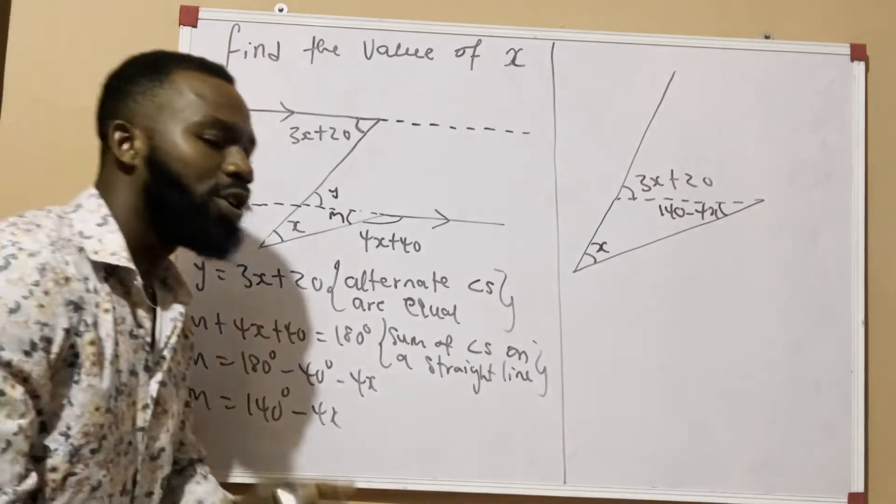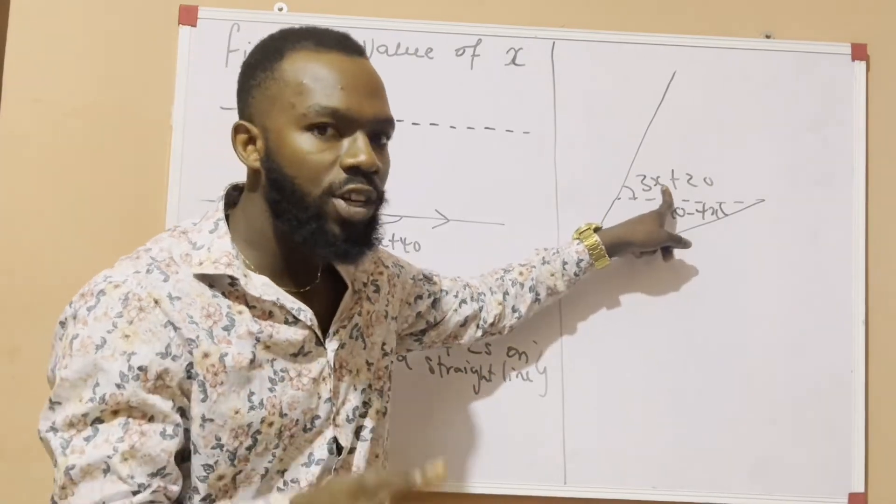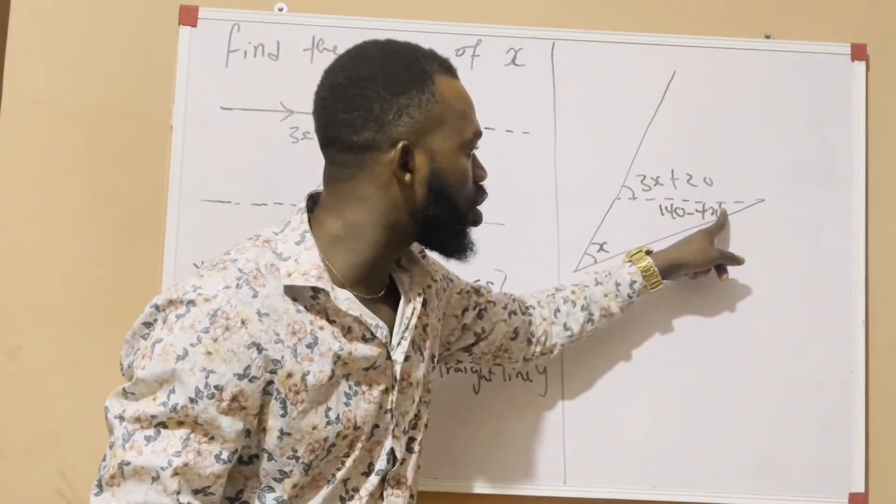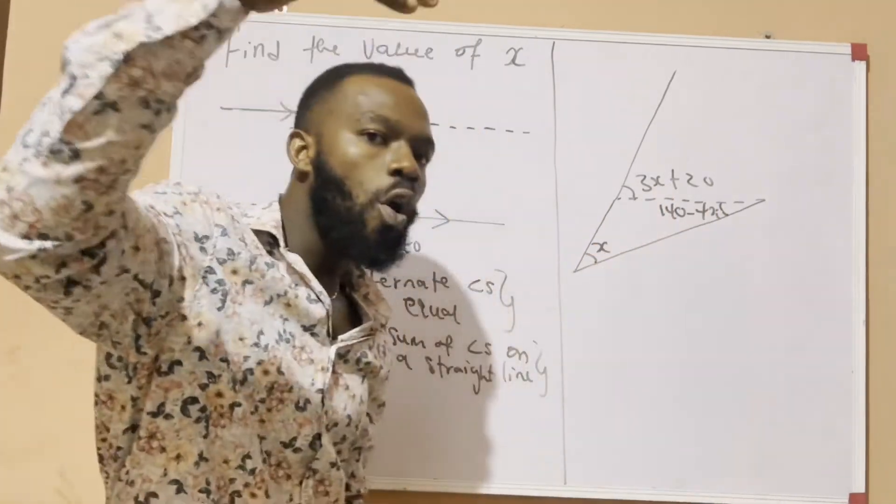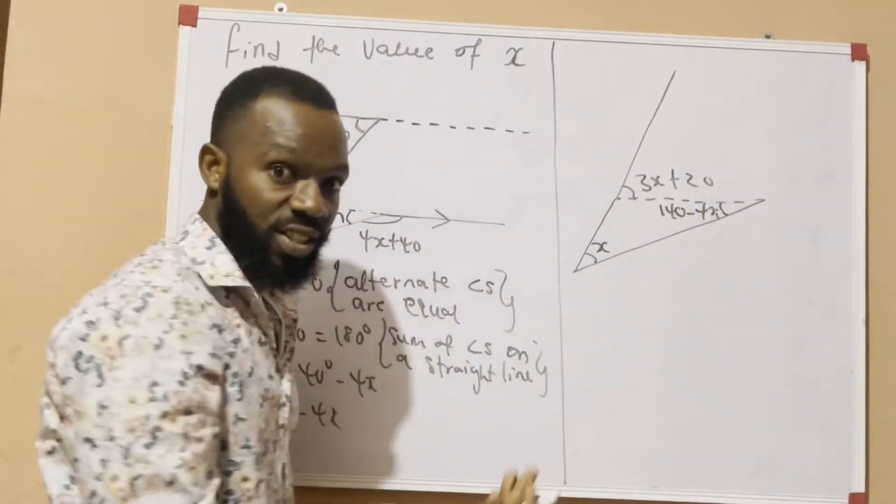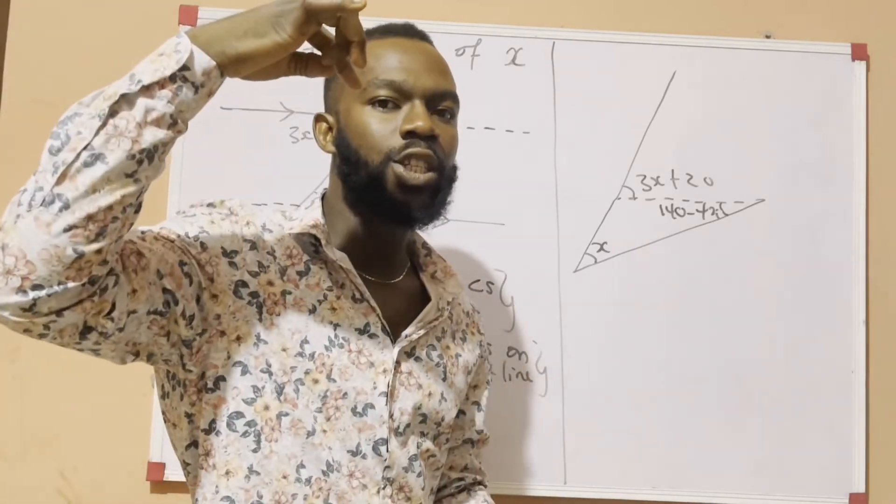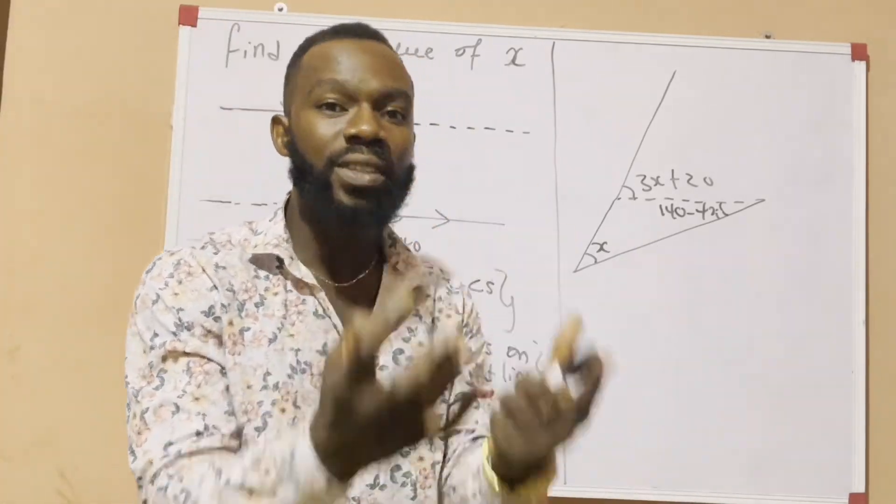Now, this is what we are going to use. We are going to use the theorem that says the exterior angle of a triangle is equal to the sum of the two opposite interior angles. So, it means... What is an exterior angle? An exterior angle is an angle that is from outside a shape. The interior angles are from inside the shape.